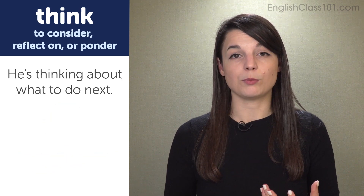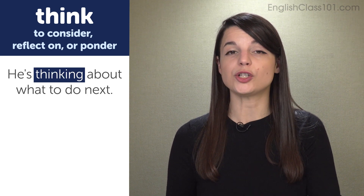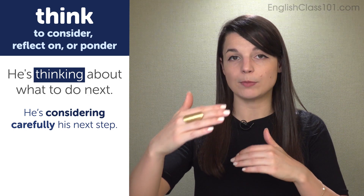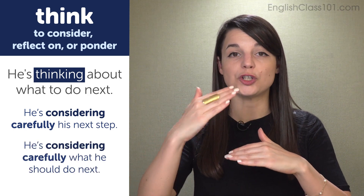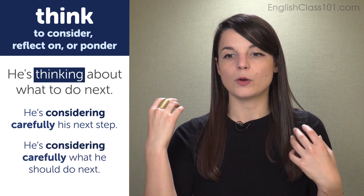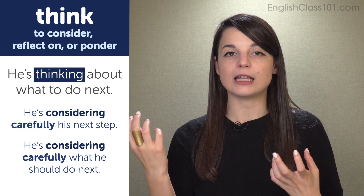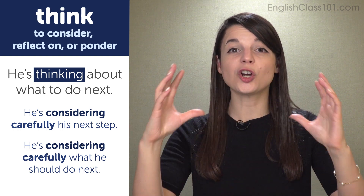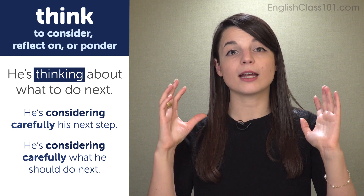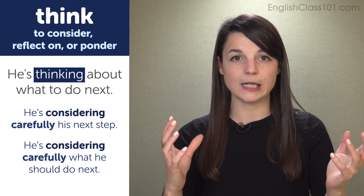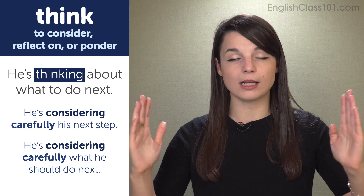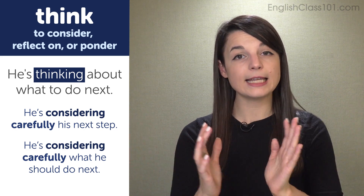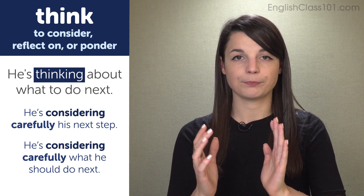In the second example sentence, he's thinking about what to do next means he's considering carefully his next step, what he should do next. Thinking is used in the progressive tense here to show that he is currently at this time considering something carefully. We can make it shorter and use the verb thinking: he's thinking about what to do next.